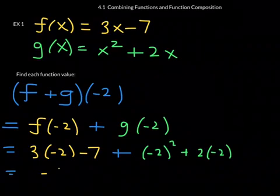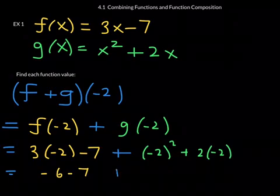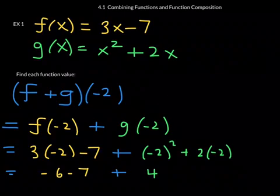Let's continue with this arithmetic. So this is what? Negative 6 minus 7 plus—and the negative 2 squared is positive 4—and then 2 times negative 2 is minus 4. Let's continue.